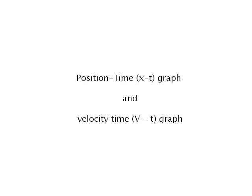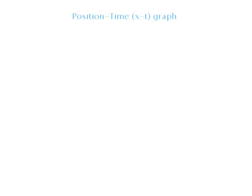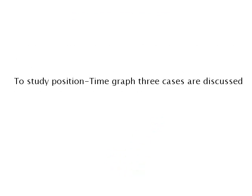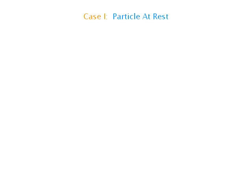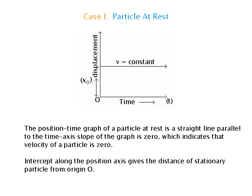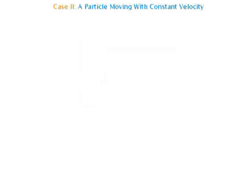Position-time (x–t) graph and velocity-time (v–t) graph. The motion of a particle can be represented and analyzed with the help of a graph showing the relationship between two quantities. The study of the position-time graph enables us to know not only the position of the particle but also the exact nature of the motion, i.e., whether it is uniform or accelerated. Case 1 — Particle at rest: The position-time graph is a straight line parallel to the time axis; slope is zero, indicating velocity is zero. The intercept along the position axis gives the distance of the stationary particle from the origin.